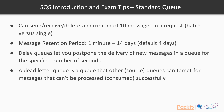Delay queues let you postpone the delivery of new messages for a specified number of seconds — from 0 seconds up to 15 minutes — during which the message is invisible to consumers. A dead letter queue is a queue that other source queues can target for messages that cannot be successfully processed or consumed. For example, if a message has errors or doesn't comply with your schema, you can route it to a dead letter queue to investigate separately, raise an alarm, or process it with a different application.